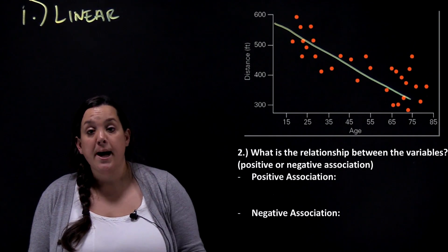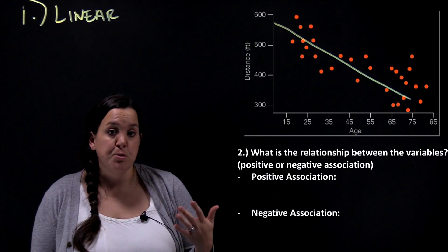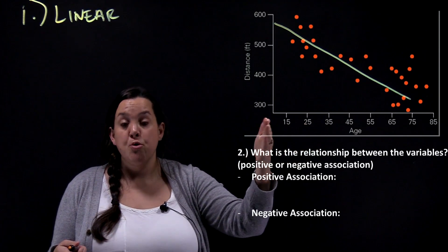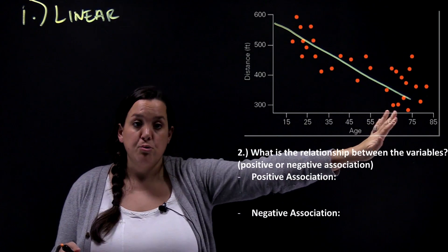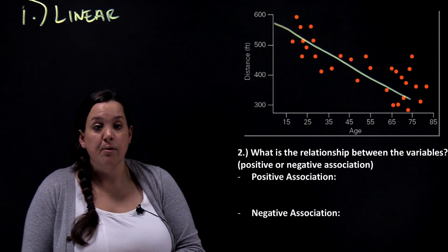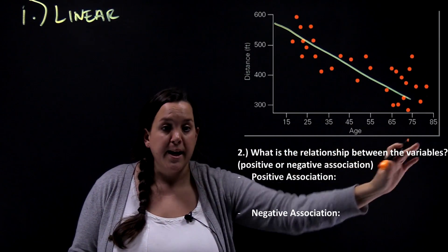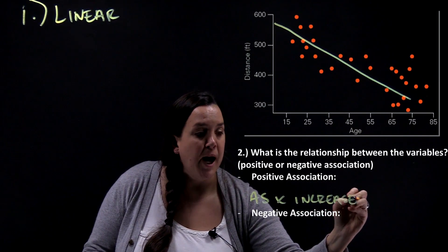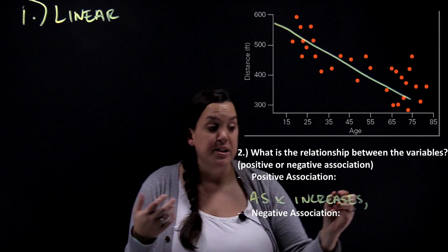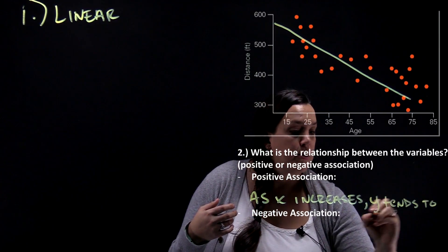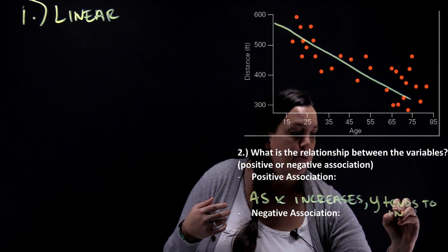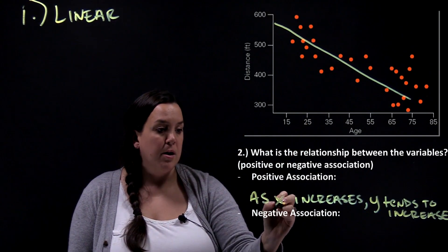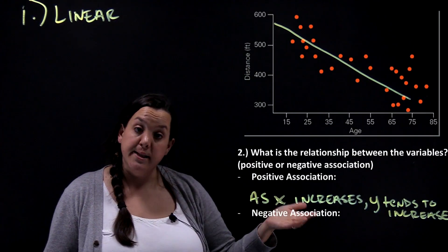The second question to ask about a scatterplot is whether the association is positive or negative. You want to read a scatterplot like you would read a book — from left to right. For a positive association, as the x variable increases, y tends to increase as well.